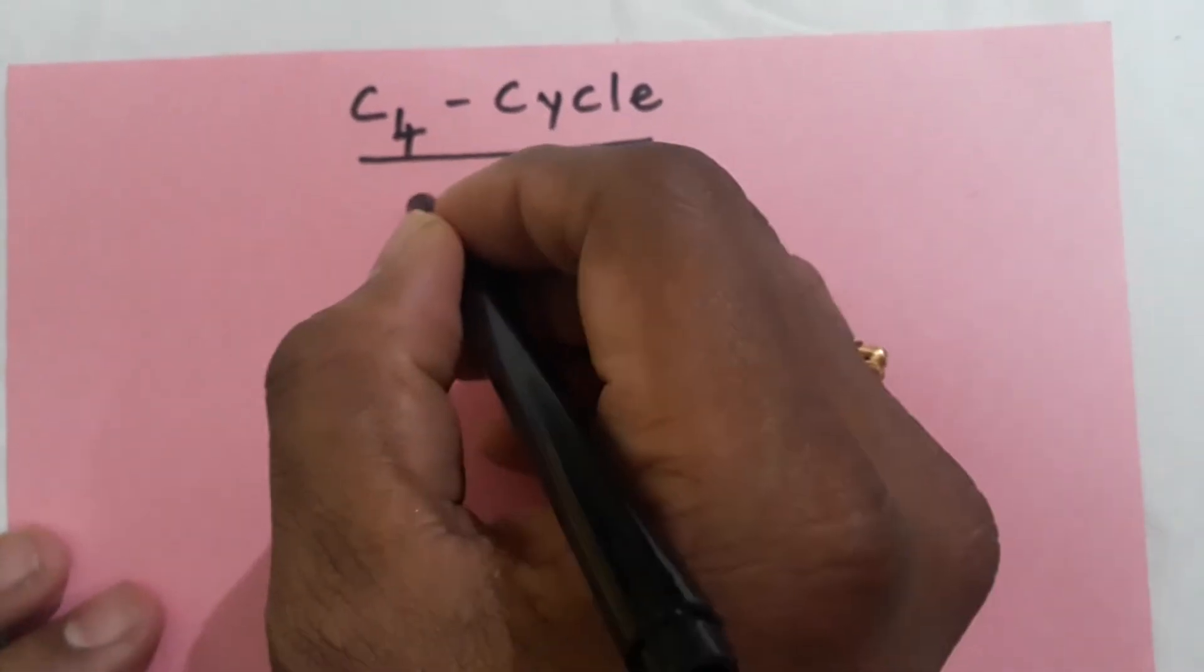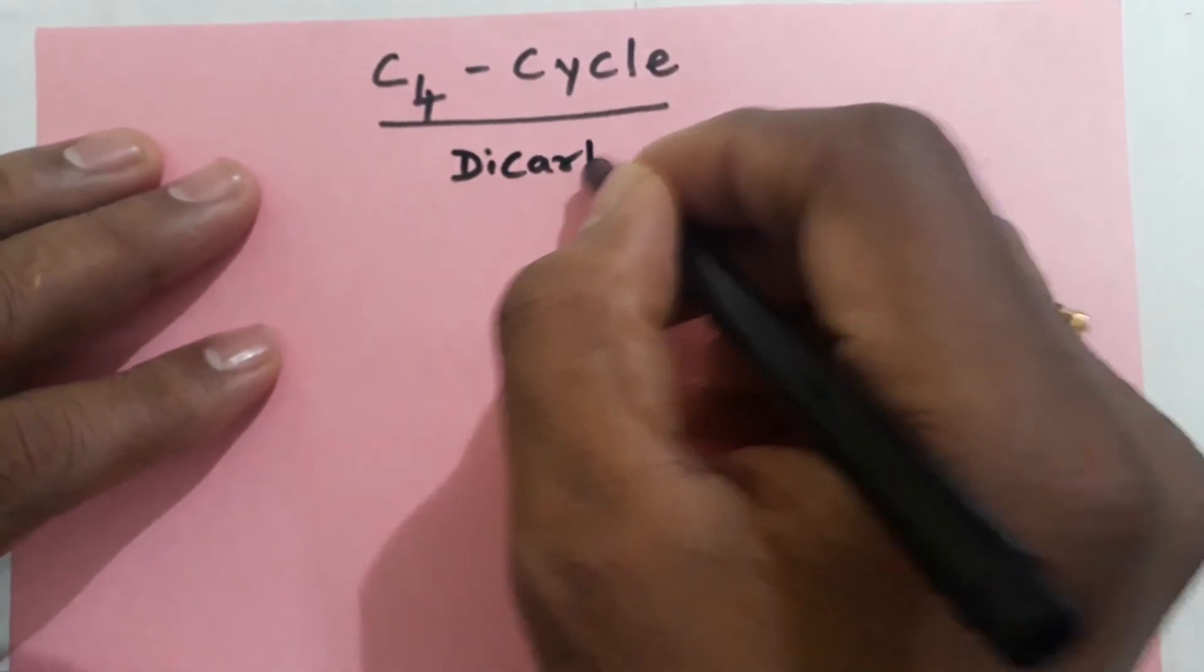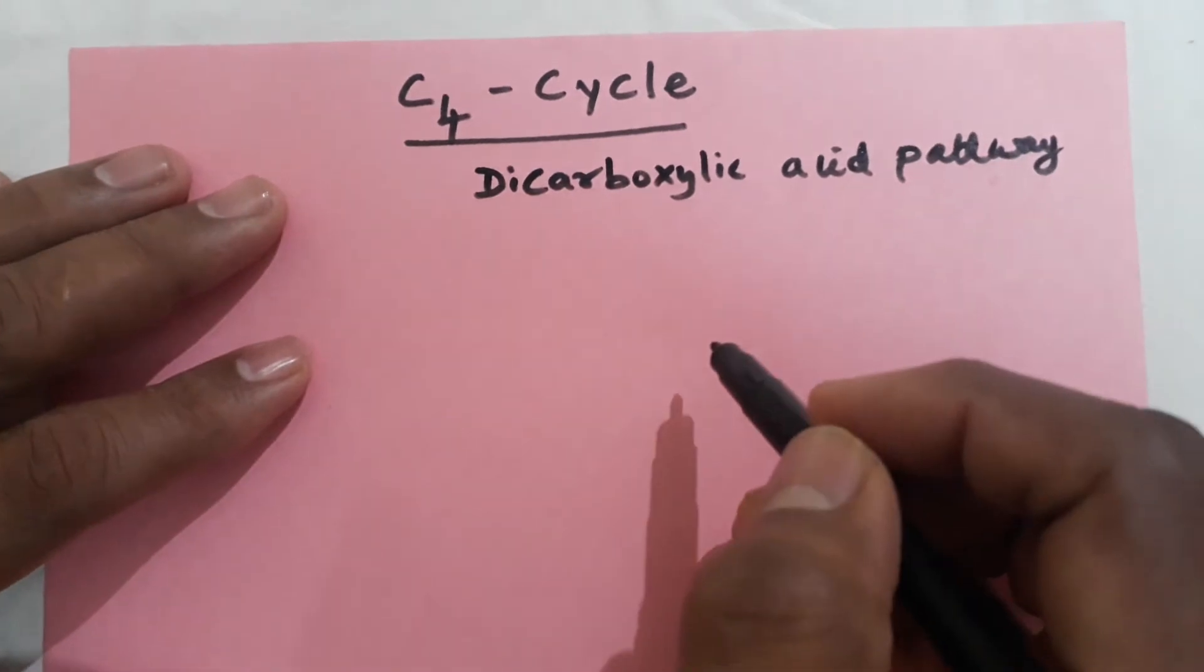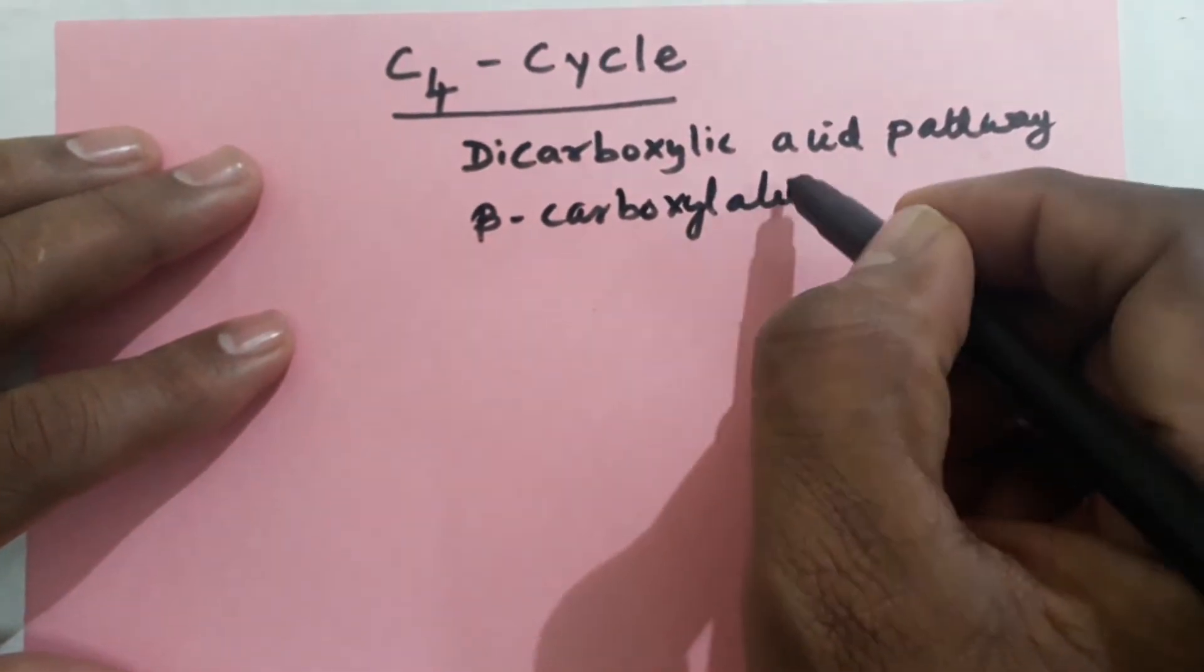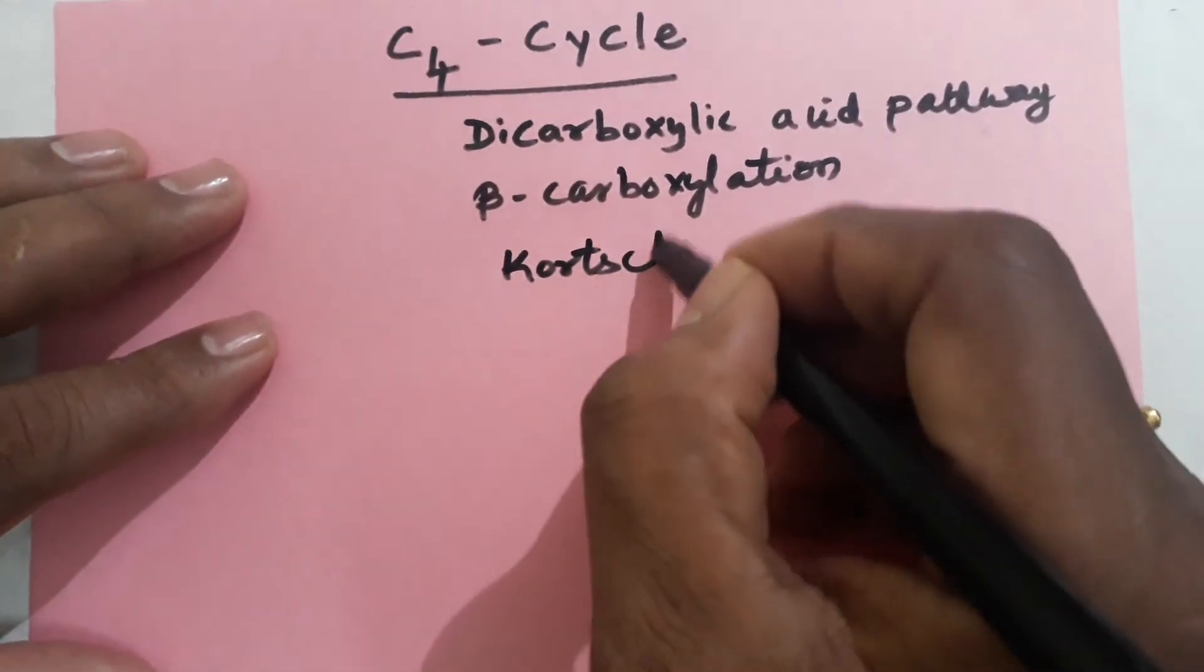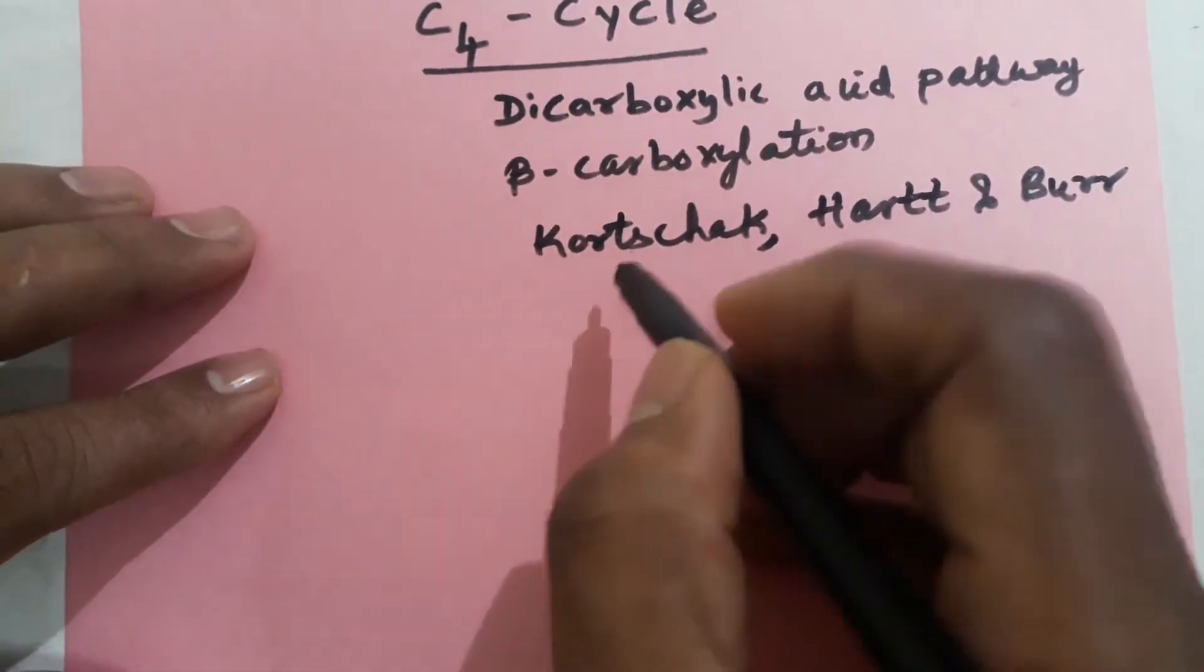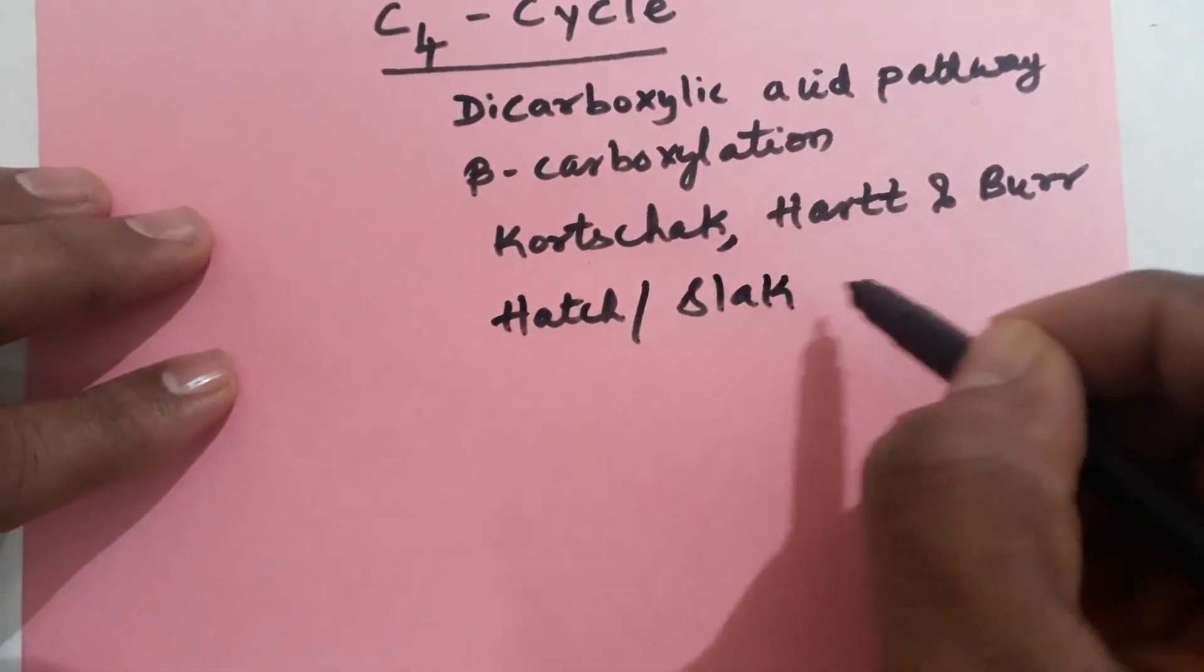Another name is also there: dicarboxylic acid pathway, beta-carboxylation pathway, Coats Chalk, Heart and Burr pathway, and Hatch-Slack pathway.